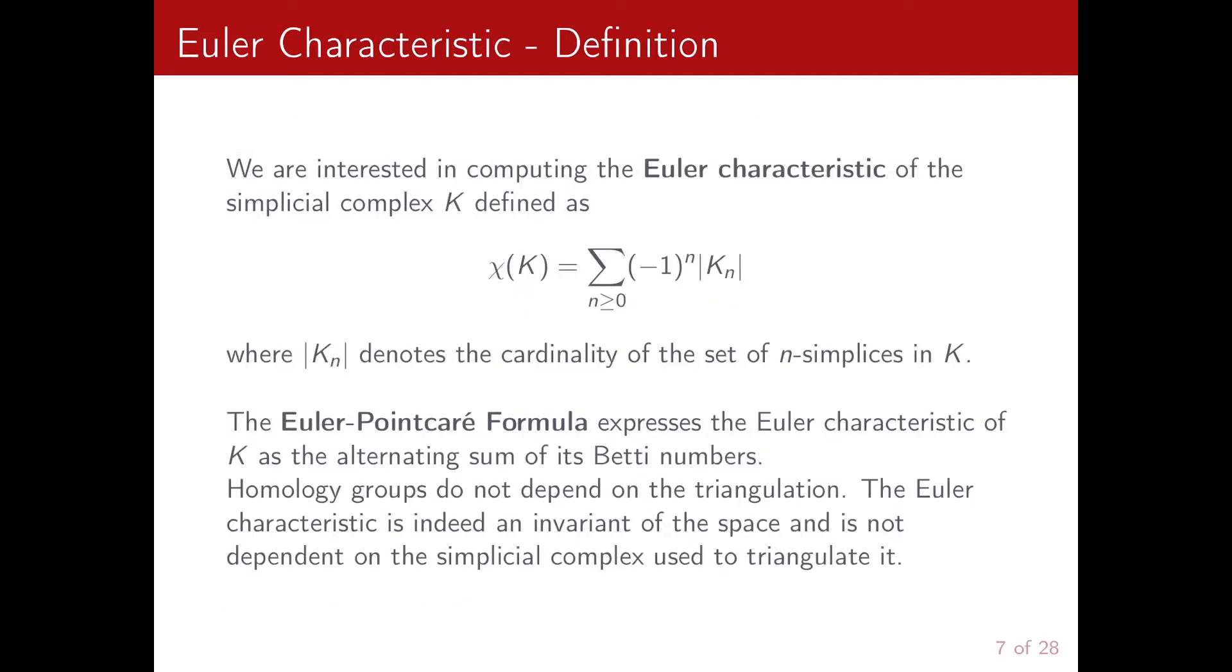We are interested in computing the Euler characteristic of the simplicial complex K, defined as the alternating sum of the cardinality of the sets of its n-simplices. From the Euler-Poincaré formula, we know that the Euler characteristic of a simplex is also the alternating sum of its Betti numbers.